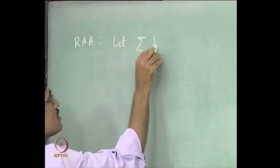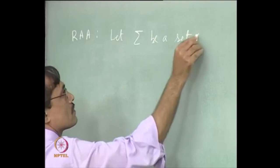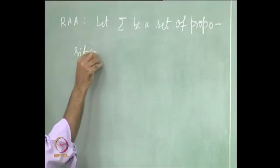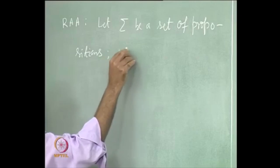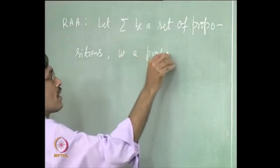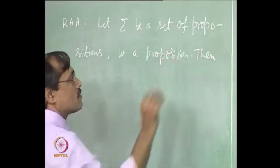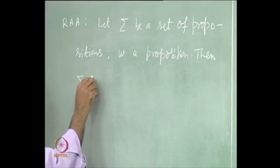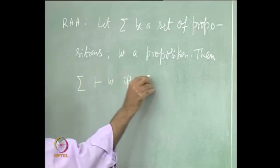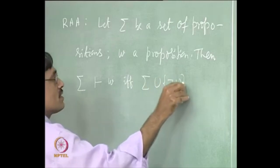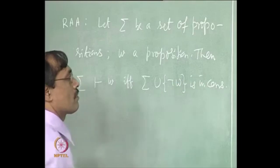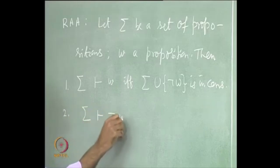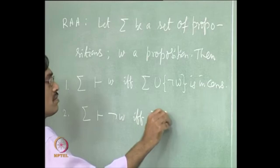We start with a set of propositions, and we need another proposition. Then something happens about the consequence relation. It says that sigma entails w if and only if sigma union not-w is inconsistent. Similarly, without this negation sign, sigma entails not-w if and only if sigma union w is inconsistent.